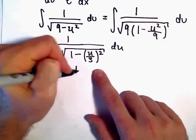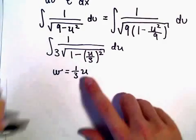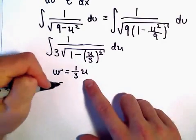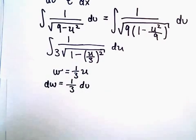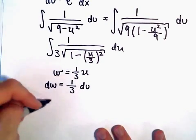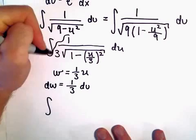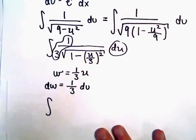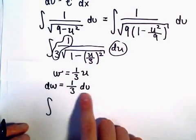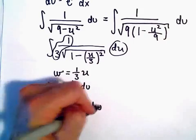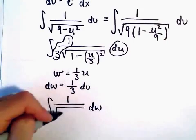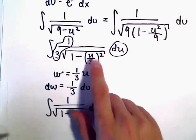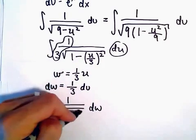So I'm going to let w equal 1 third times u. So then my dw would be 1 third du. And if you think about it in this problem, we really have a 1 third du. So we can just replace that with our dw. And then we would be left with 1 over the square root of 1 minus, okay, so now we're calling this w squared.